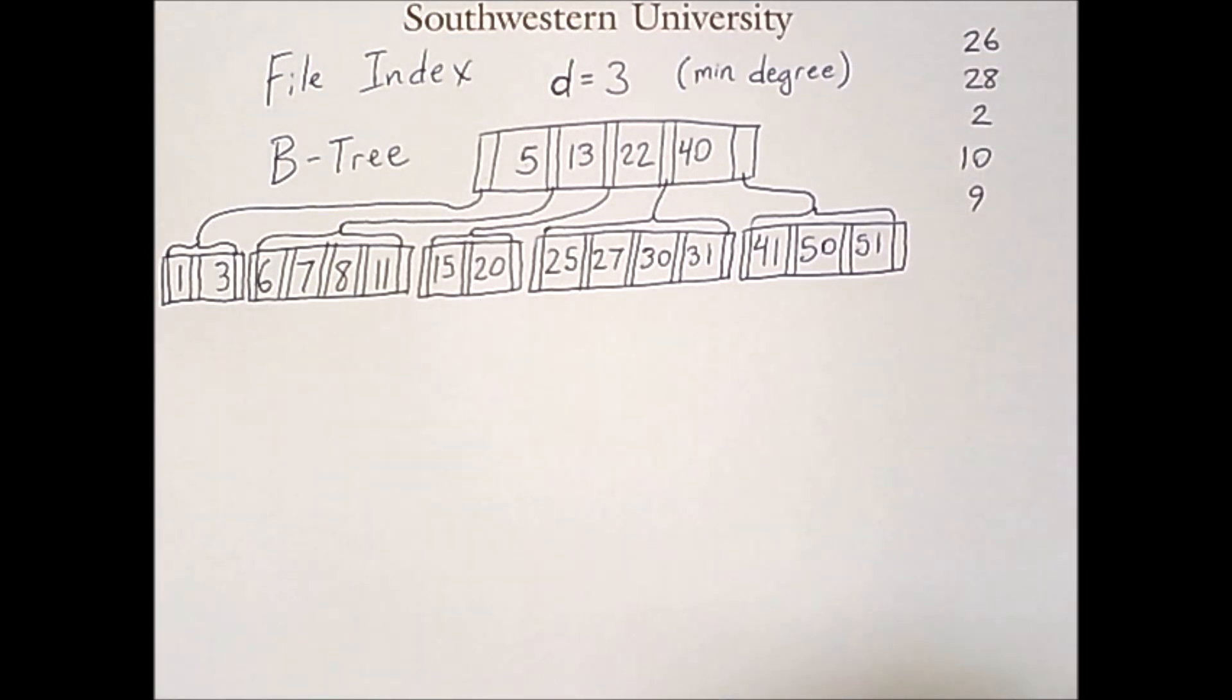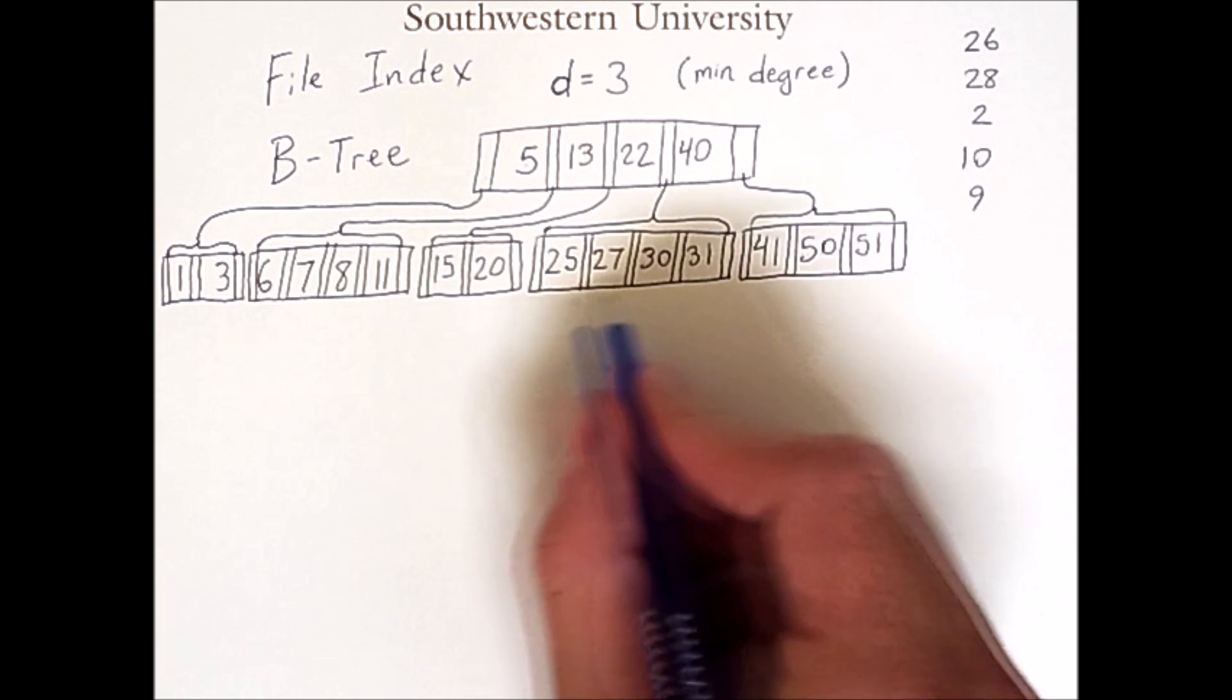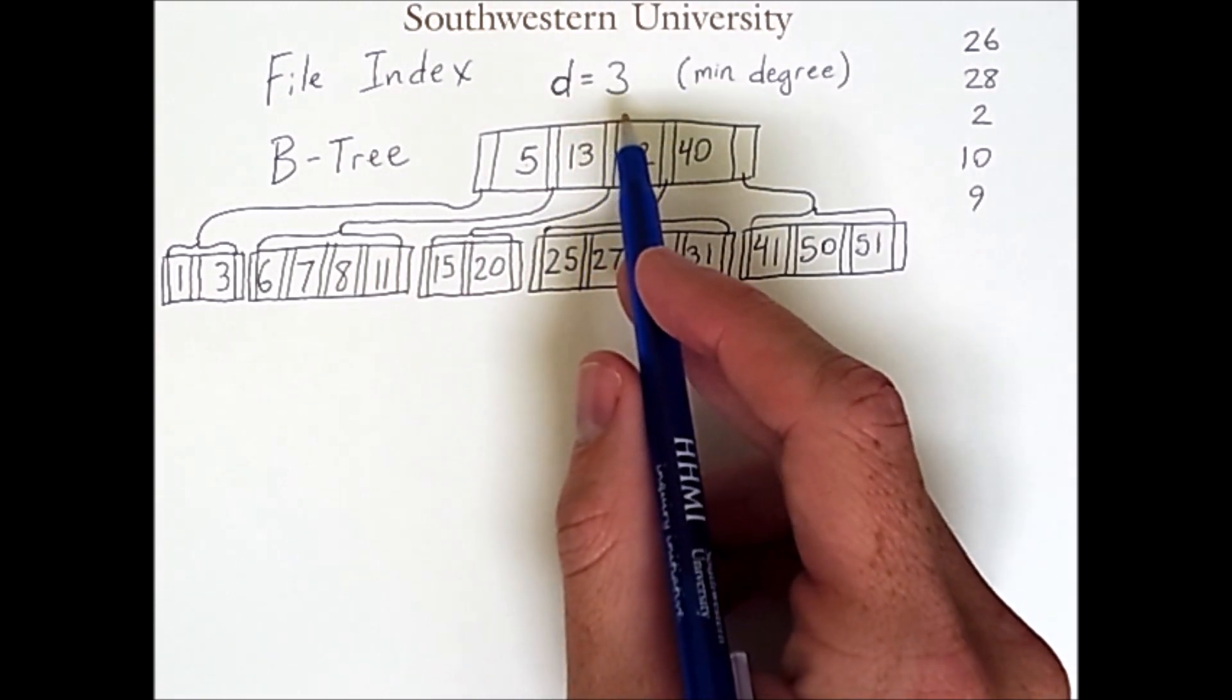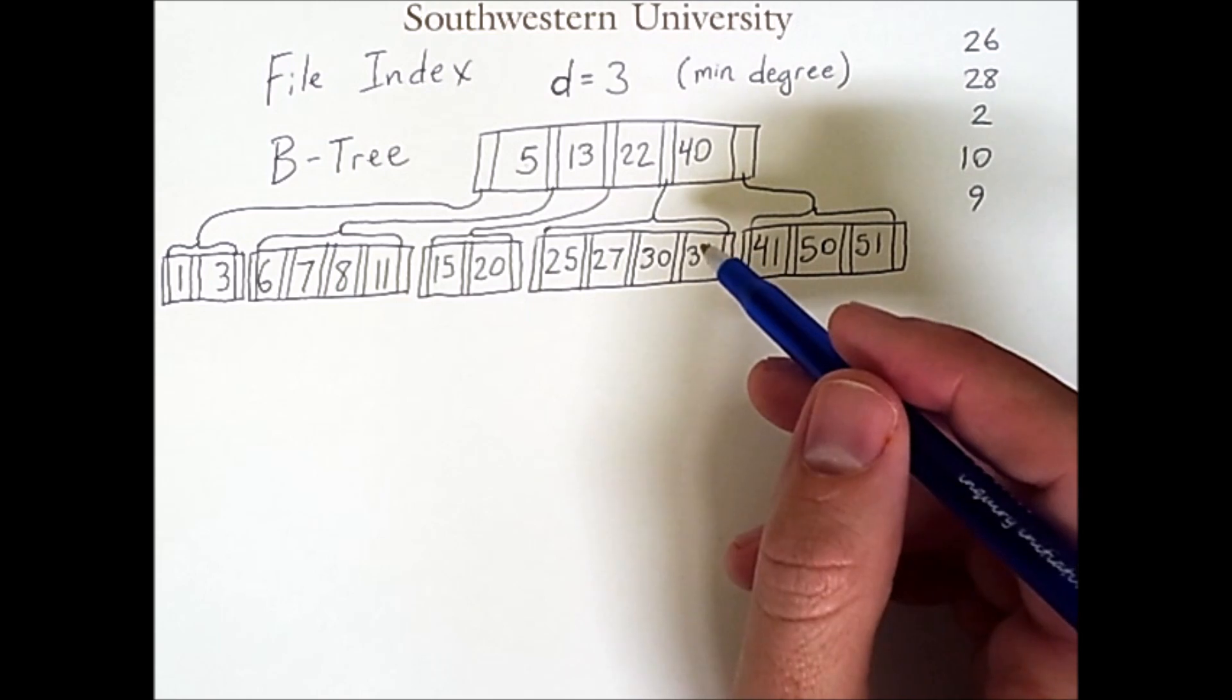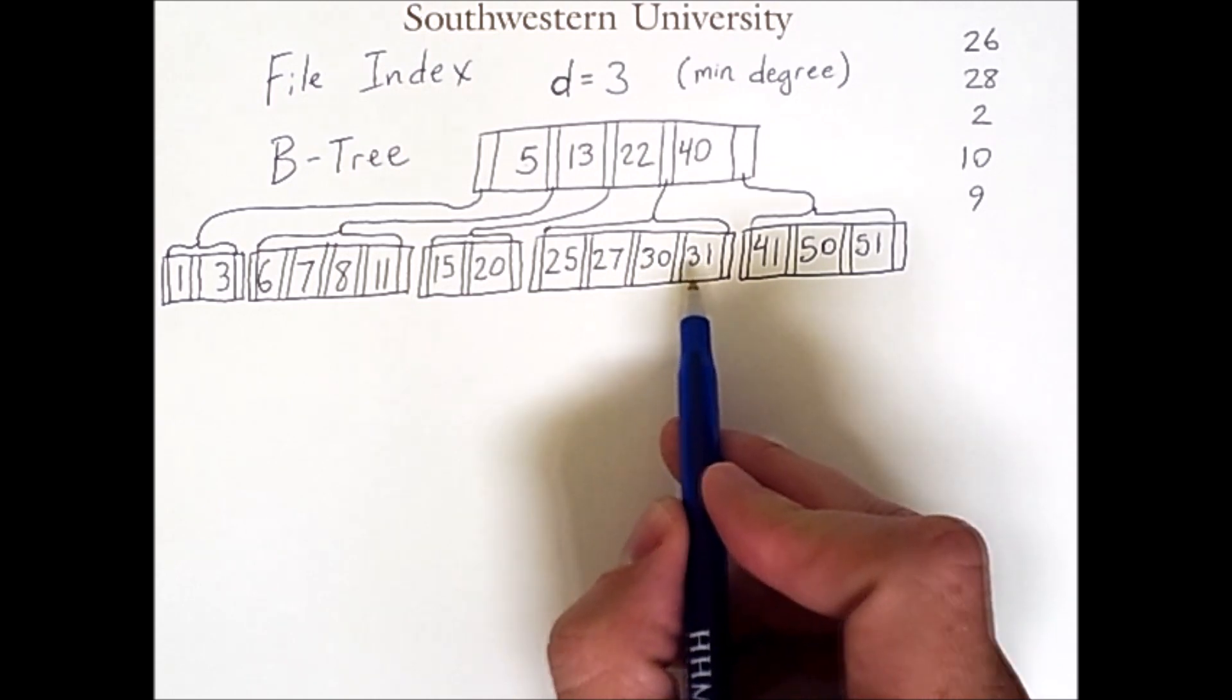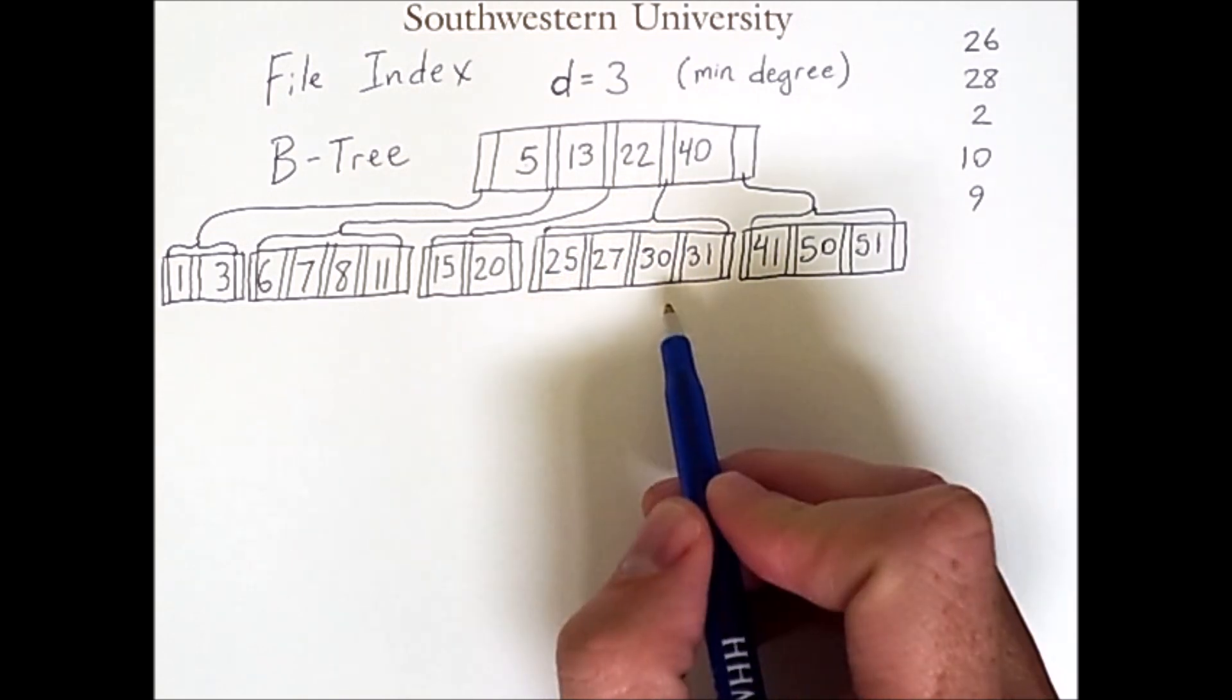Now some of these additions will not cause dramatic changes, but some of them will. Now, for example, the first insertion of 26 can go into this node. And remember we said that with a min degree of three, we could have at most six child links, and therefore at most five key values. Well, there are currently only four key values here, so all we have to do is insert the 26 between the 25 and the 27, and we'll be done.